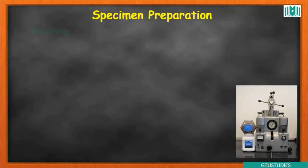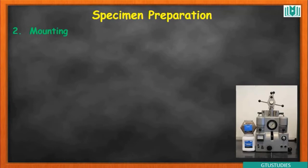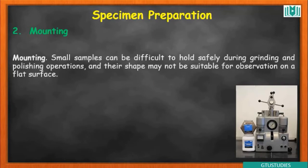The second step involves ensuring the proper size of the sample. If you need to grind and polish the sample, you need to hold it in a holder. Small samples can be difficult to hold safely during grinding and polishing operations — these parts will not be able to hold themselves without suitable holding equipment. This step is mounting.